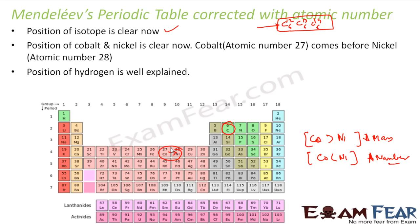The position of hydrogen is now well explained because it is determined by electronic configuration. Hydrogen has atomic number 1 and electronic configuration 1, meaning it has only one electron in its outermost valence shell, so it is placed in group 1, along with all elements that have one electron in the outermost shell. The grouping is now based on electronic configuration, not on hydrides or oxide forms — though hydrogen does form similar hydrides and oxides.